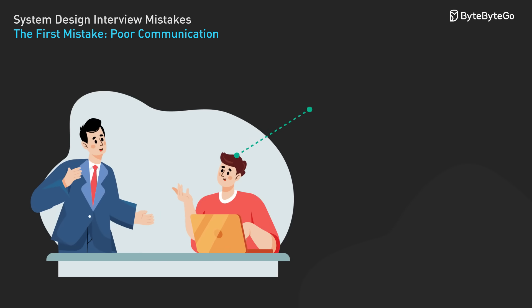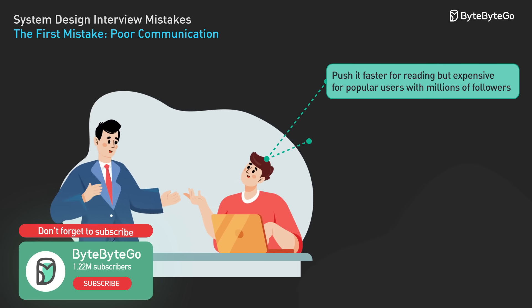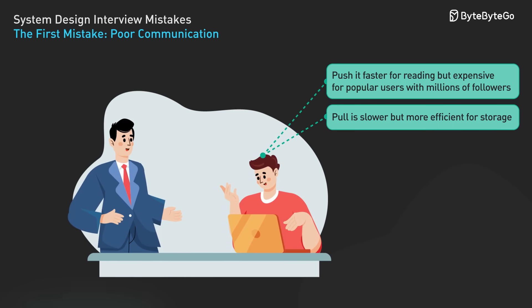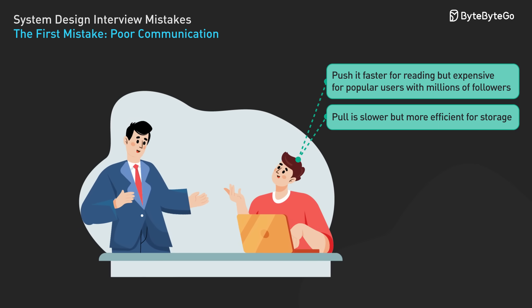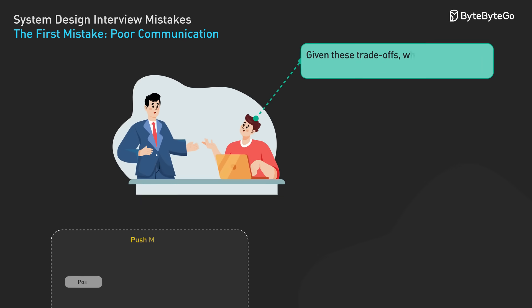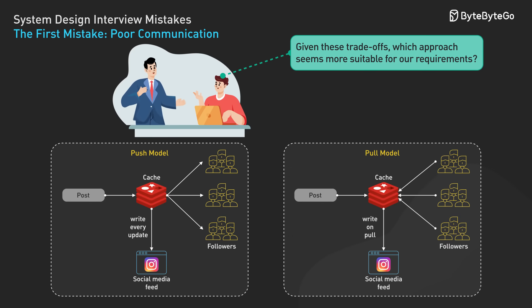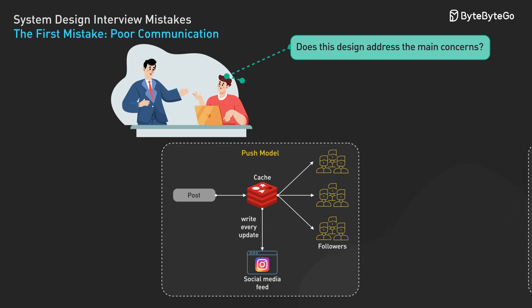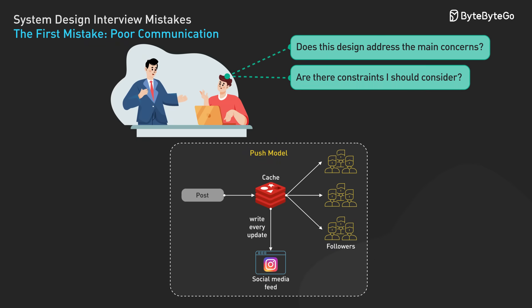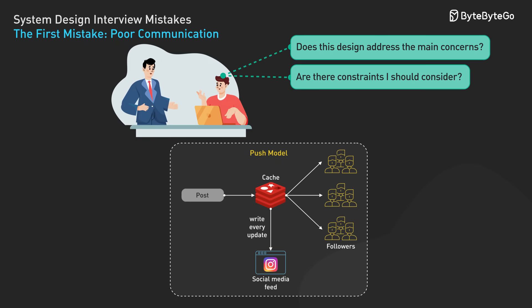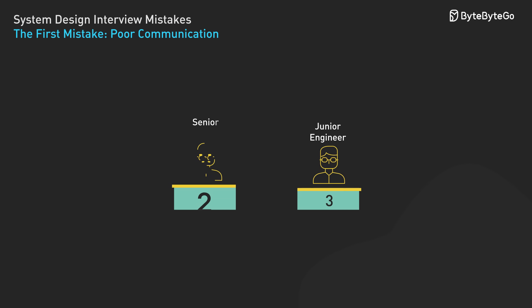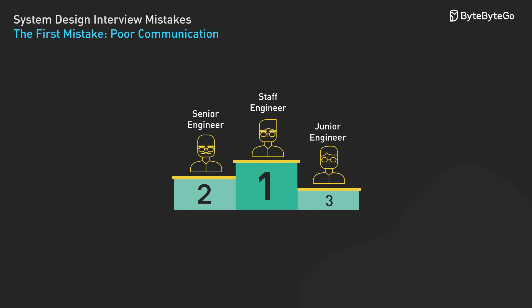Push is faster for reading but expensive for popular users with millions of followers. Pull is slower but more efficient for storage. Engage your interviewer: given these trade-offs, which approach seems more suitable for our requirements? Ask for feedback — does this design address the main concern? Are there constraints I should consider? This demonstrates collaboration skills essential for senior engineering roles.